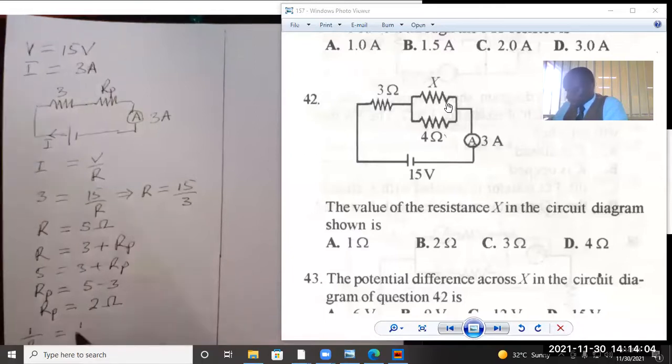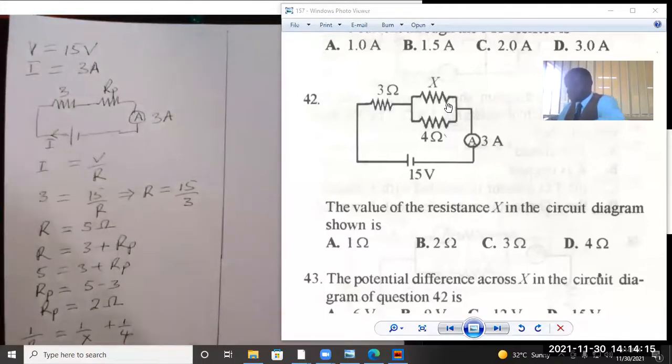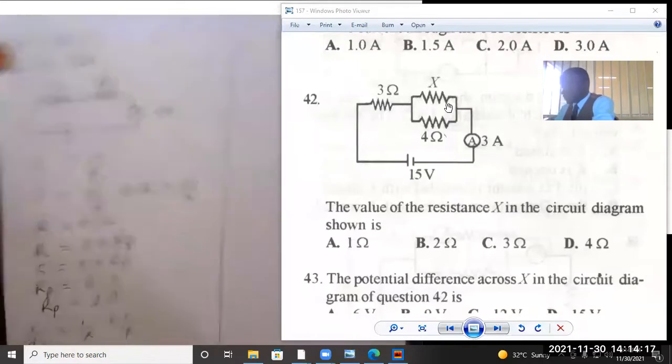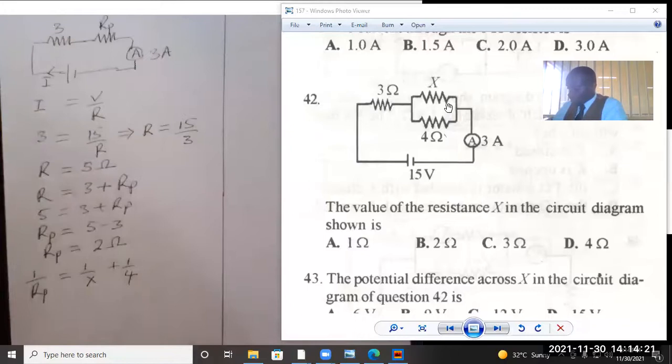For resistors in parallel, 1 over RP equals 1 over X plus 1 over 4. They are in parallel with each other. We substitute the value. 1 over RP is 2.